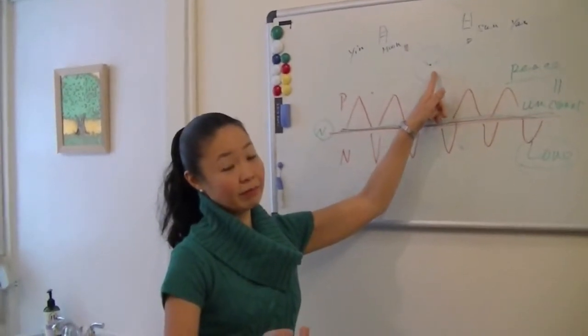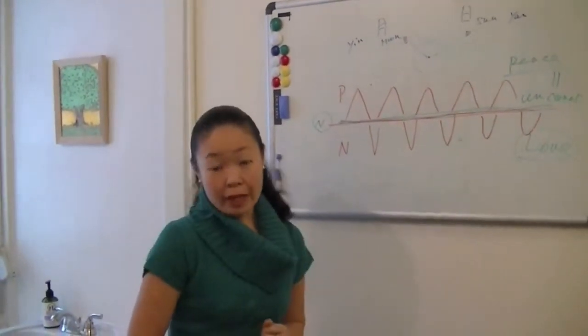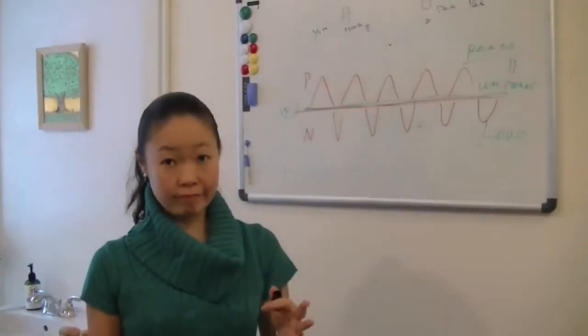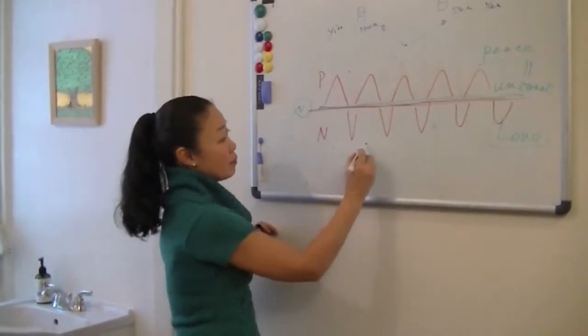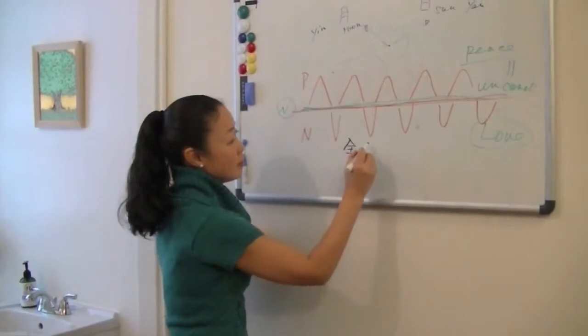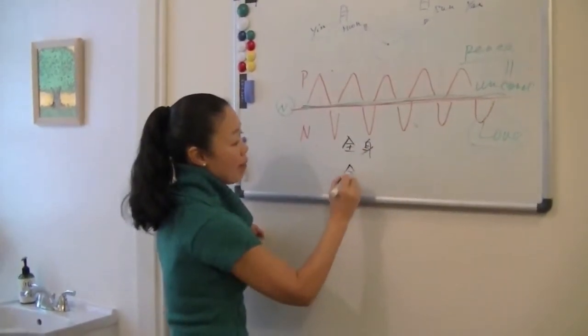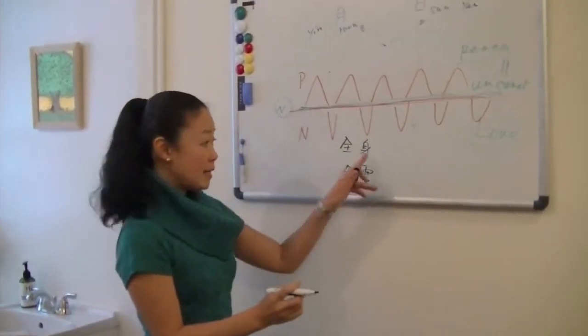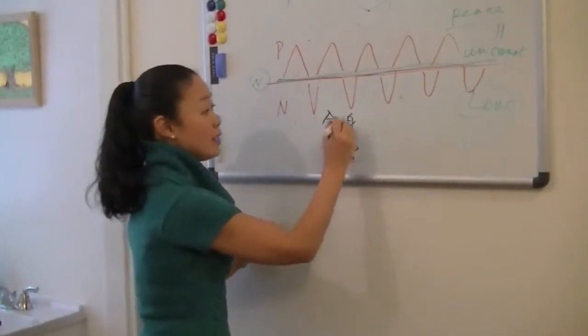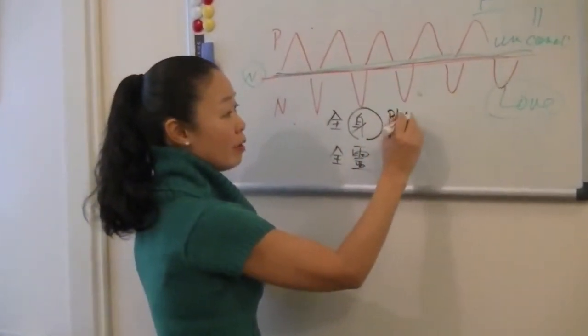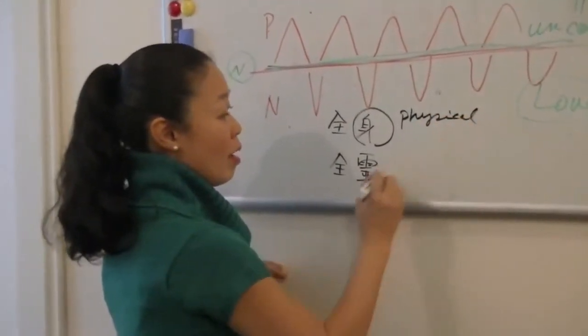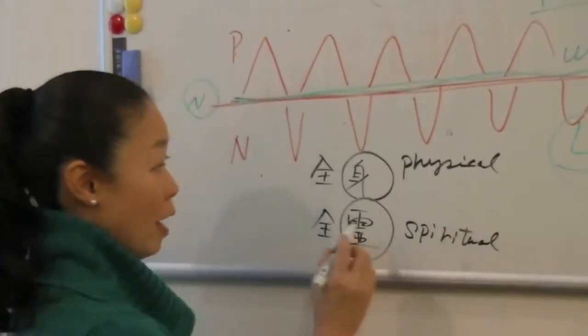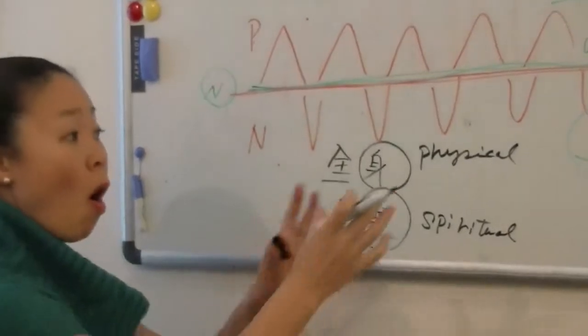Another example I want to give you: in Japan, if we are centered, we call it zen shin zenrei. Zen shin zenrei—this is the body physical, and this is spiritual. The zen means whole, so whole physical being and whole spiritual being become one.